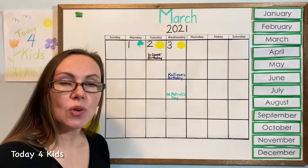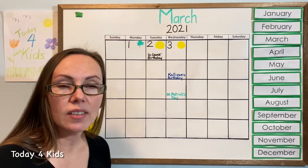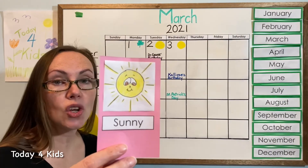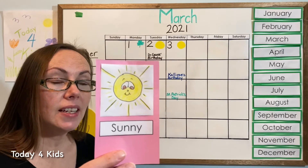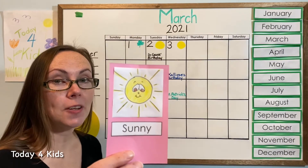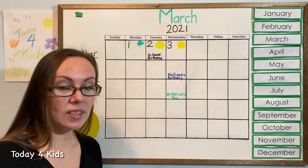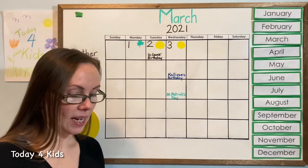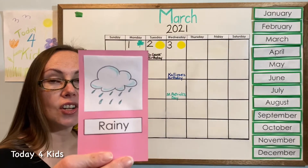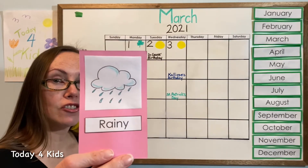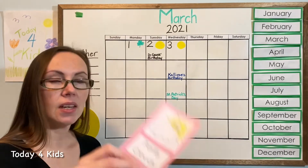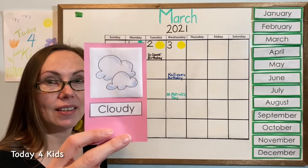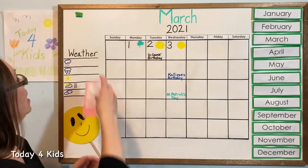Did you look outside before you joined us to do our calendar today? What is the weather like where you are? Is it sunny? Do you have lots of sun? Is it getting nice outside? If you have snow, is it beginning to melt away? I'm hoping that our snow is going to start melting away — the forecast is for some nice sunny weather this week. What about snowy? Is it snowing where you are? It's not snowing where I am. What about raining? Are your clouds raining down on you so you can splash in some puddles? Not where I am. What about partly cloudy, partly sunny? What about cloudy? I have cloudy weather today, so I'm going to put cloudy on the board.